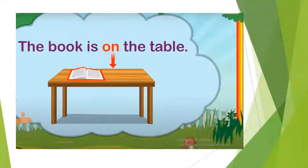The book is on the table. Here you can see that on is a preposition and it is telling us the position of the book.